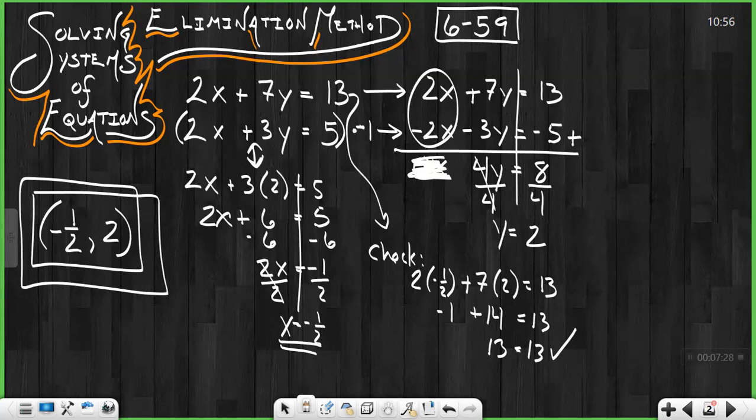This is part one of this lesson. Part two, you can watch in the next video where we'll learn how to deal with problems where it's not as simple as multiplying by a negative 1. Sometimes we have to multiply it by a different number. And sometimes you have to multiply both equations by two different numbers in order to eliminate one variable.